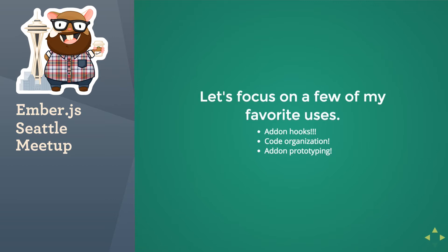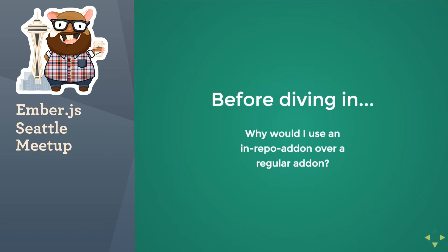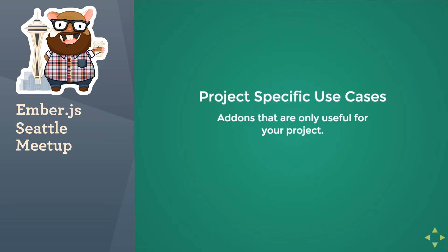I'm going to focus specifically on a few of my favorite uses. The add-on hooks are extremely powerful. Code organization — they can be really nice for that. And then add-on prototyping. If you don't want to go through the whole rigmarole of creating an add-on, if you run into something in your project and think you could maybe create an add-on for this, this is generally what you'd want to use an in-repo add-on for, just to try it out. If you have something very specific to your project that you don't think is going to get reused, or you can't reuse it — say you've got a very private thing that would be perfect for an add-on but you can't publish it — an in-repo add-on would be a great use for that.